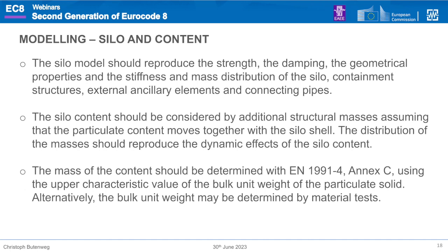Some basic rules are given in Part 4. First, the model should include strength, damping, geometrical properties, stiffness, and mass distribution. It should also include external ancillary elements such as connecting pipes, checking compatibility and accounting for additional mass placed on the roof.